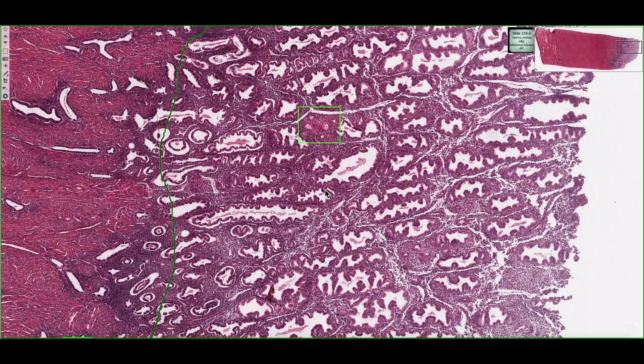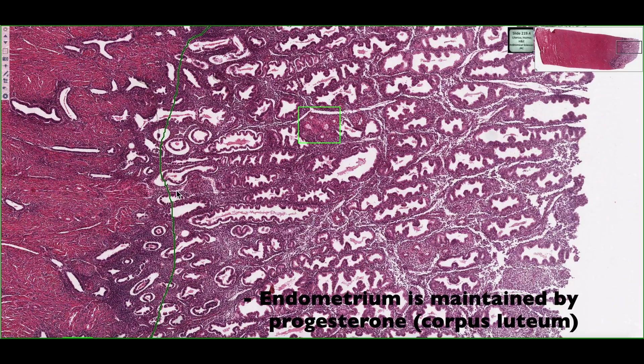In this section, we're looking at a uterus that's in the secretory phase of the menstrual cycle. In the secretory phase, the uterus is under the influence of progesterone being released from the corpus luteum of the ovary.